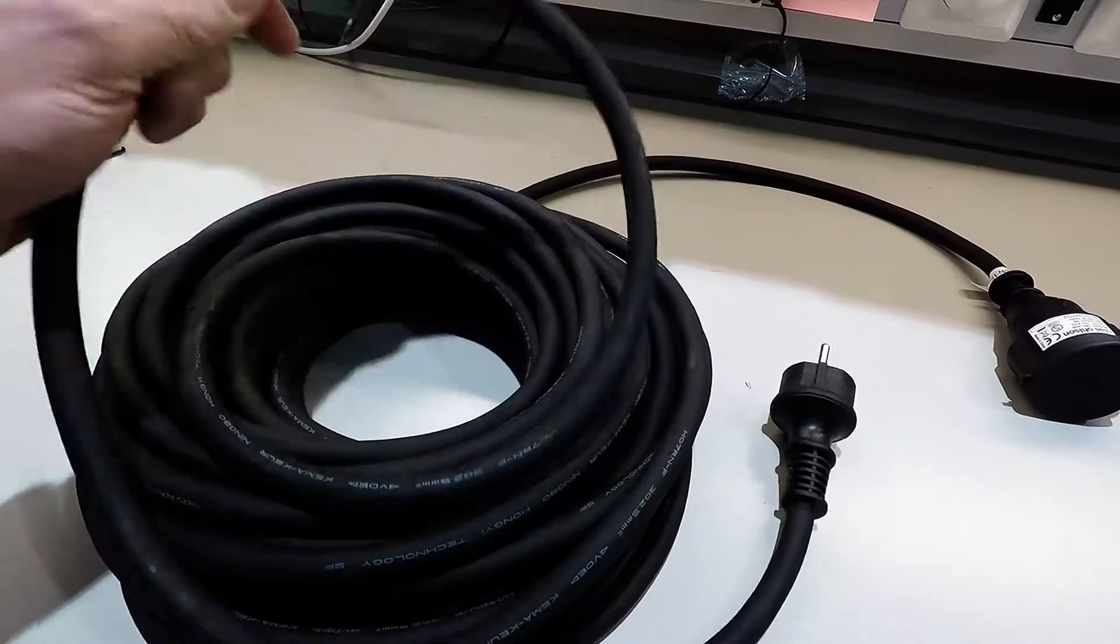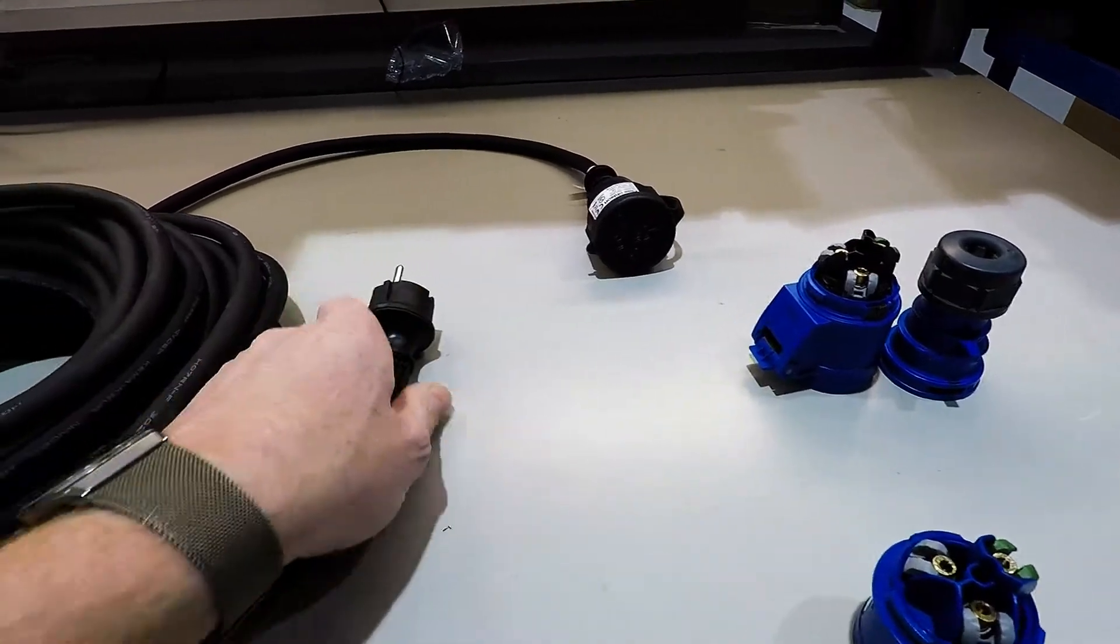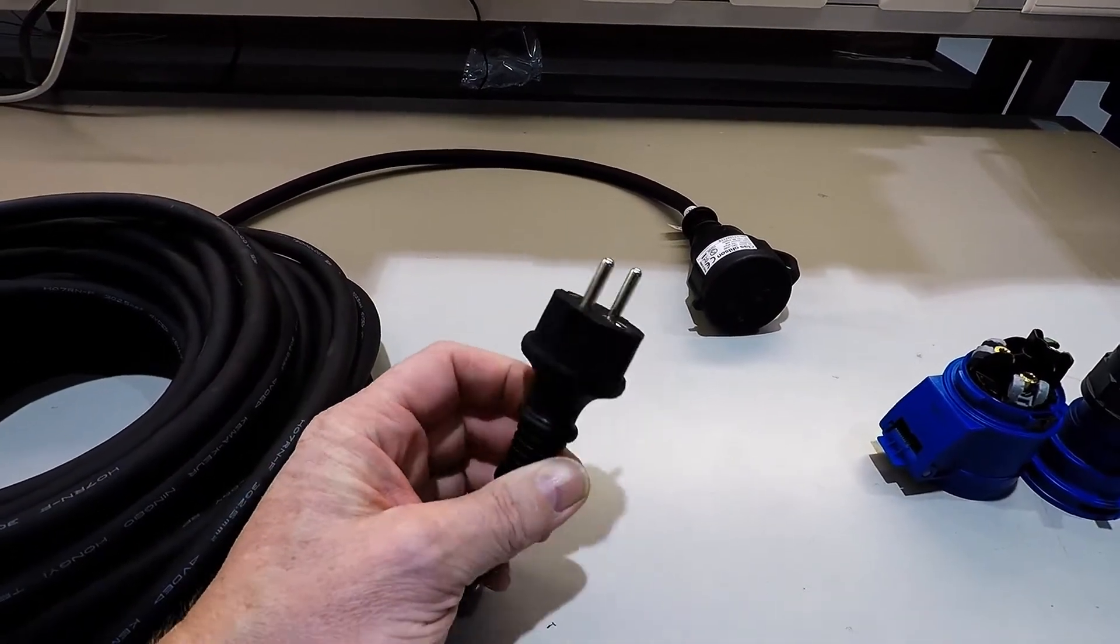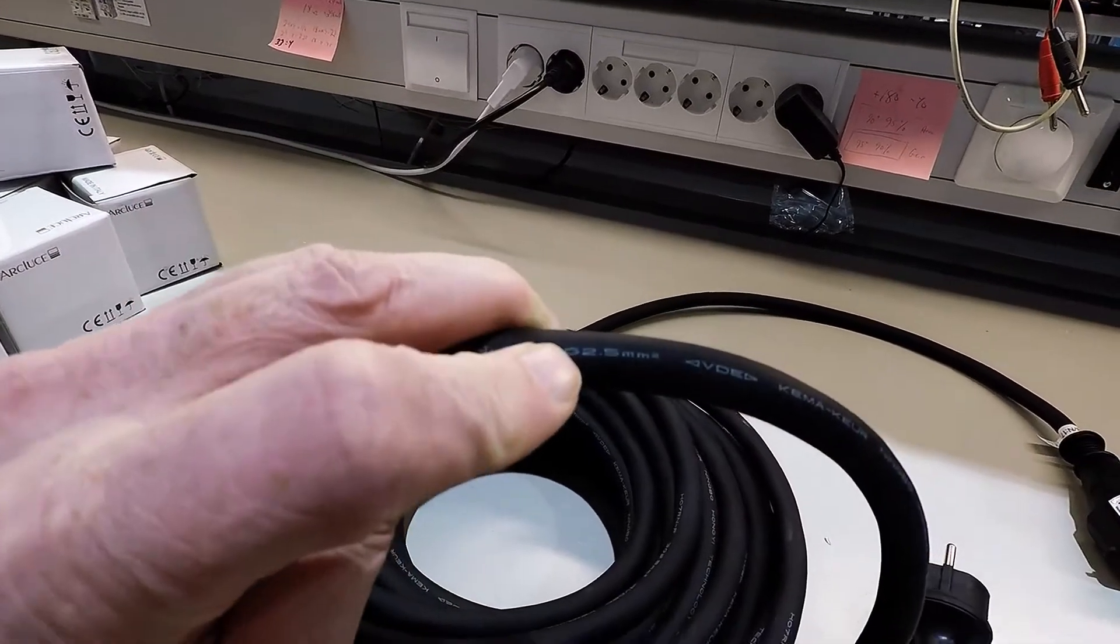That's very important. Because this is a 16 amp socket. This is only for 10. But the 2.5 is for 16 amp as well.